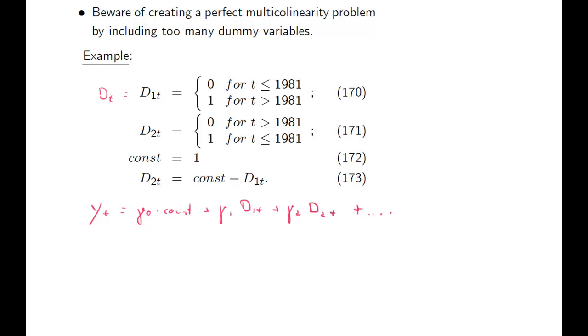In our previous model, we had this guy included and this guy, but not this guy. If you include all of them, these three terms, the constant D1 and D2T, are perfectly related to each other because D2T is nothing else but 1 minus the dummy variable D1T. D2T will have 1s at the beginning and then 0s. That's the same as a vector of 1s minus D1T which starts out with 0s and then has 1s. If you include all three of them, these three will be perfectly correlated with each other. That's a case of perfect multicollinearity and you just won't even estimate your model.